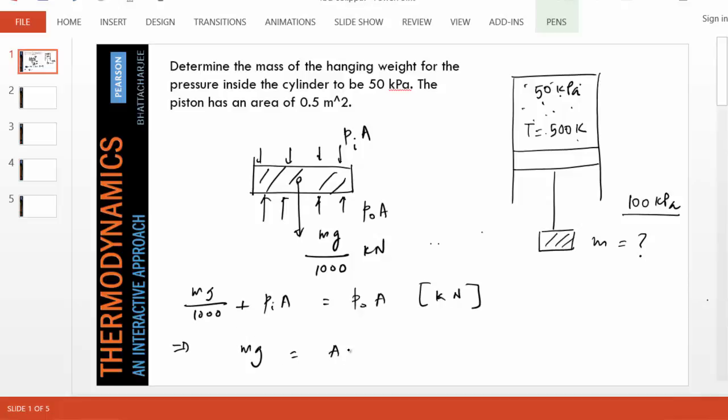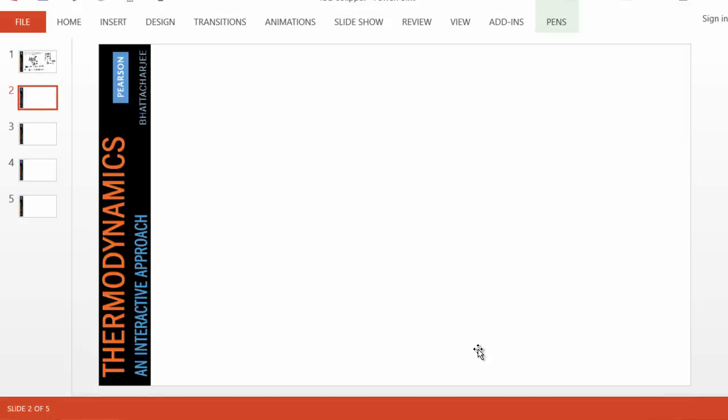Therefore, the mass can be obtained as m equals p0 minus pi times the area divided by g, which is 100 minus 50 times 0.5 divided by 9.81. That should give us 2548 kilograms. That's quite a bit of mass.